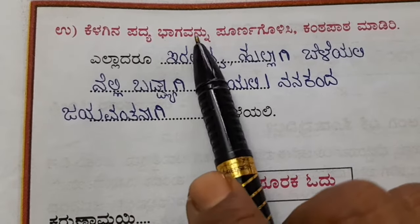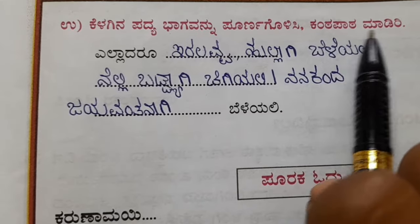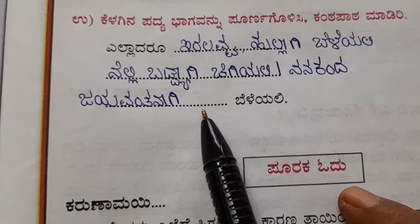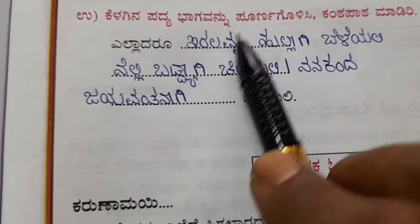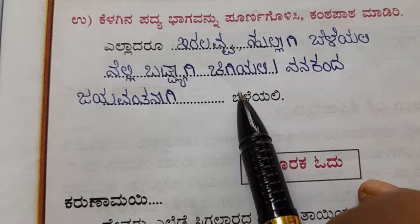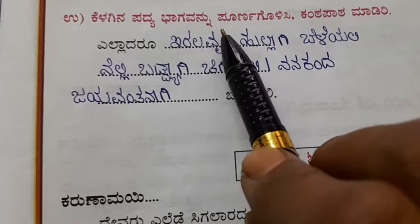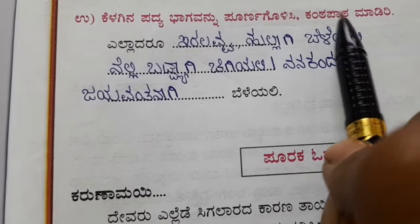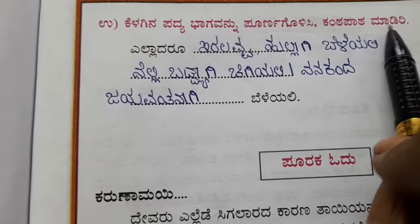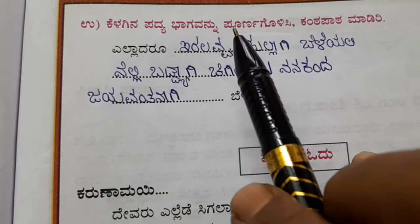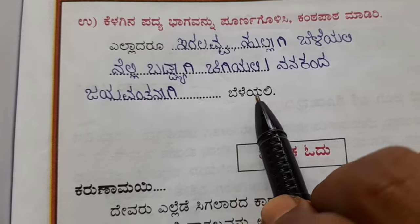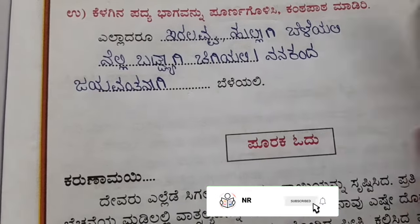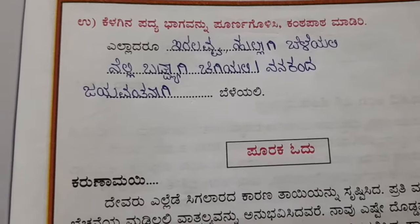U section: kaelagina padhya bhagavanu purnagolisiri, kanta paata madi — complete the given stanza from the poem by filling in the blanks and learn it by heart. Yelladar iralavva — they have given the first and last lines and you have to fill in the sentences in between. Thank you children, thank you.